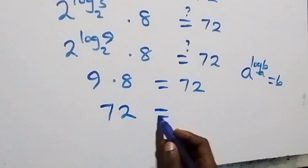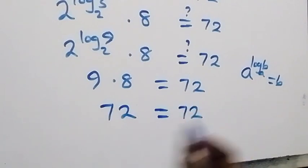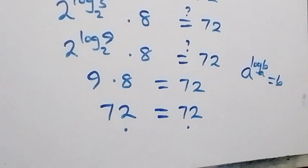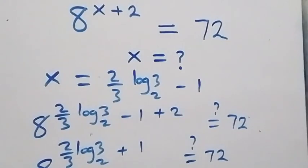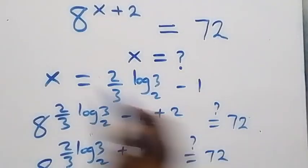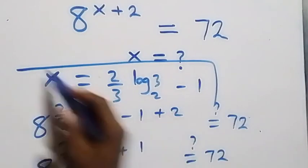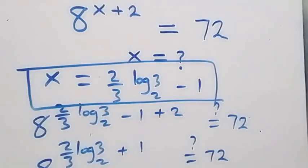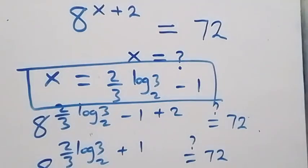The left hand side equals the right hand side, so we conclude that x equals 2 over 3 times log base 2 of 3, minus 1, satisfies the given problem. Thank you for watching — don't forget to subscribe for more videos, turn on the notification bell, share this video, give a thumbs up, and put your comment. See you next class, bye for now.